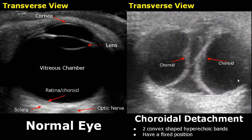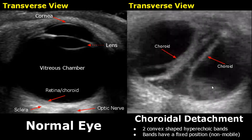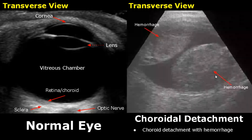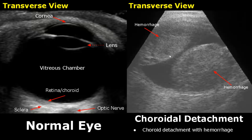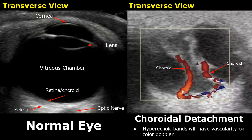A choroidal detachment has its own specific features on ultrasound — there will be two convex-shaped hyperechoic bands which will not move around and have a fixed position. Sometimes a choroidal detachment is associated with hemorrhage, in which case mixed echoes are seen within both convex-shaped structures. On color Doppler, both hyperechoic bands will have blood flow because the choroid is a vascular membrane.